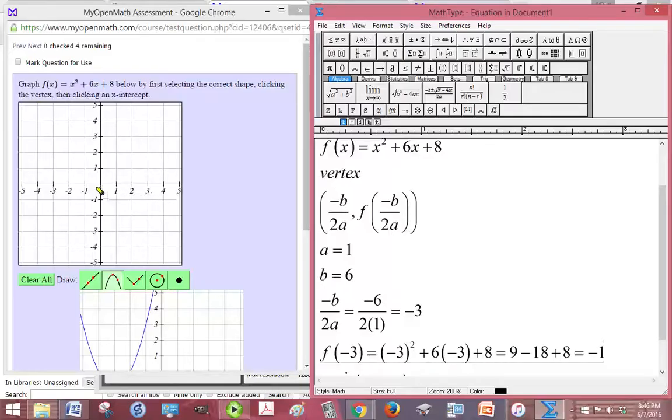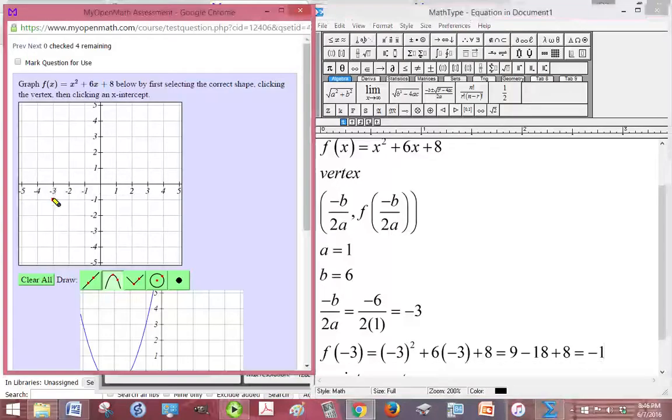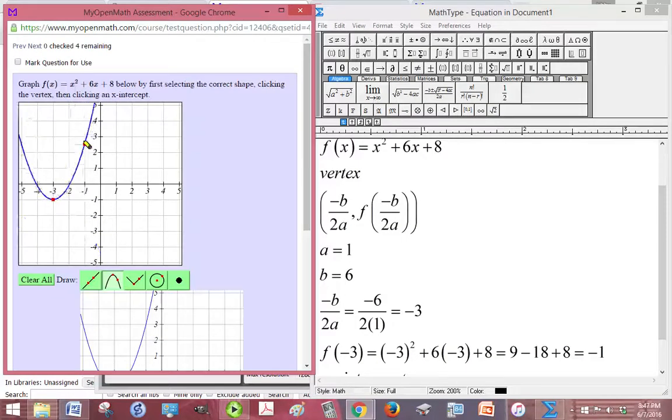So we're ready to plot our vertex. It's negative 3, negative 1 right here. And we know that since a is positive 1, that our parabola is going to go up like this, not down like this.